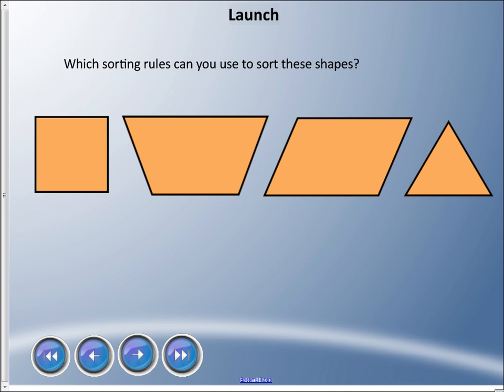The first thing we're going to do is look at sorting. Just looking at these four different shapes, what sorting rules can you use to sort these shapes? I'm not talking about rules like you're going to jail or the penalty box, but what things are you looking for to know how to put them together so that they're the same or different? What kind of sorting rules can you make up?